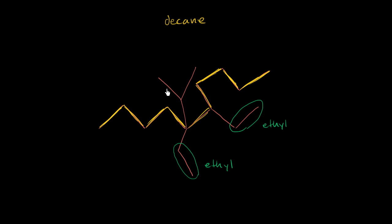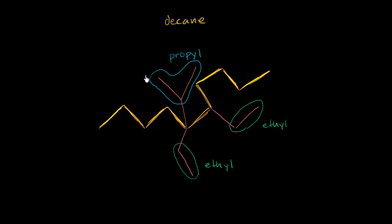And now this group right over here is interesting. We can count the carbons in it: one, two, three carbons. So it has three carbons — our prefix for three carbons is 'prop'. You could say, hey, maybe this is a propyl group. But we have to be a little bit more careful when we name it, because a propyl group you would assume you're attaching to one end. But we're not — we're attaching to the second carbon, the middle carbon, and this is a secondary carbon.